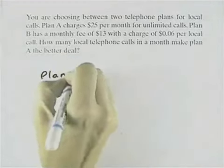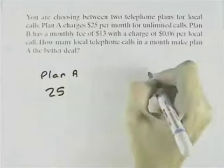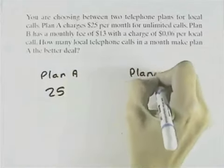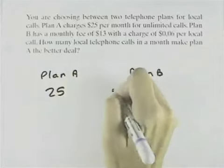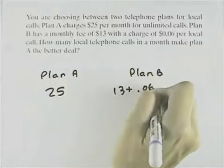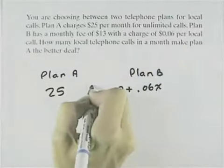Let's look at our two plans. We've got Plan A, which is a flat rate of $25, and we've got Plan B, which is $13 plus $0.06 per call, so we'll say X is the number of calls.